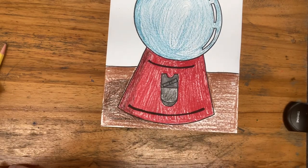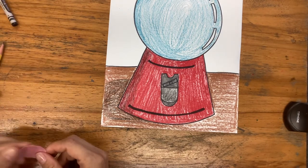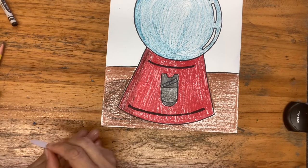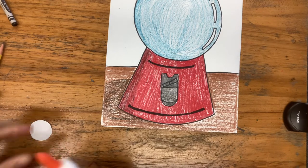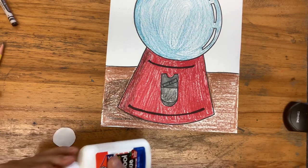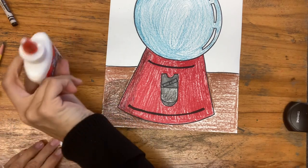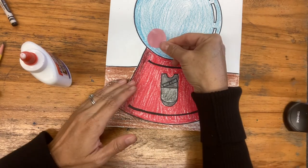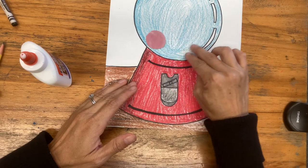As far as adding in our gumballs, you will carefully cut them out of the piece of paper that you painted them on. And then you can choose where they're going to go inside your gumball machine. I'm going to put a little bit of glue on the back. And then place that in maybe towards the bottom.